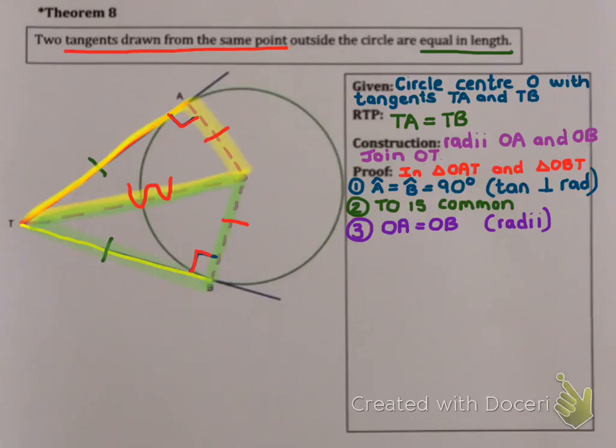So that means I have 90 degree angles, I have a hypotenuse which is equal in each triangle, and I have a side which is equal in each triangle. Which means I can conclude that OAT is congruent to OBT because I have right angle, a hypotenuse and a side.